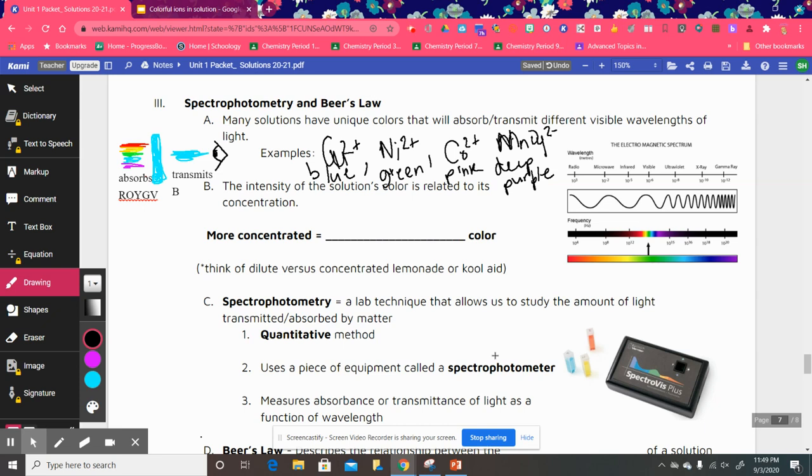So a lot of the transition metals will have colorful ions. The copper ion is blue. As visible light reaches those copper ions, they'll absorb certain wavelengths of light. And then they will transmit that blue or reflect the blue color, so they're absorbing all of the other wavelengths of light.